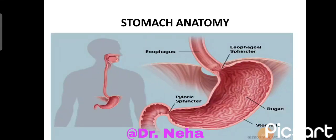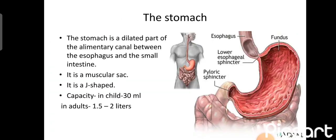In this video we will see the anatomy of the stomach. The stomach is a dilated part of the alimentary canal between the esophagus and the small intestine. As we can see in the diagram, it is a muscular sac and it is J-shaped, slightly oblique in its normal anatomical position.